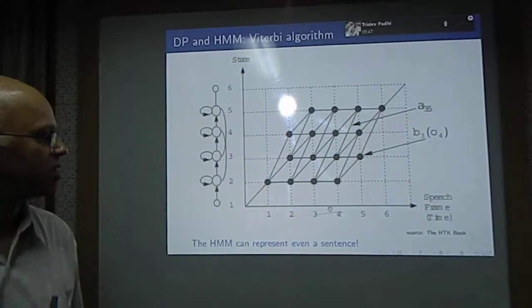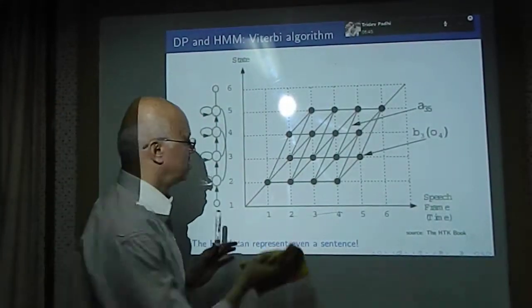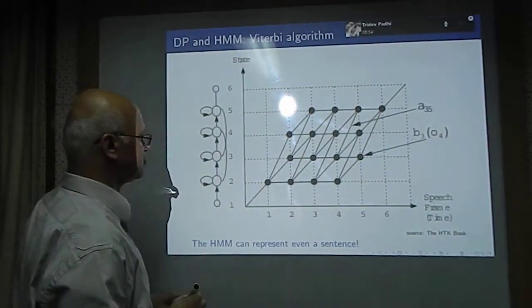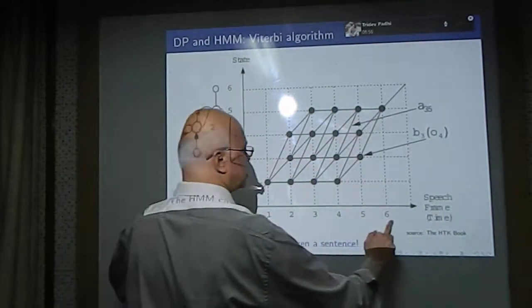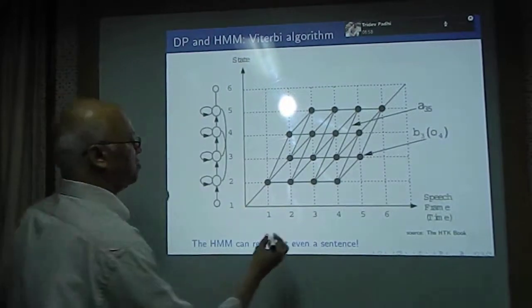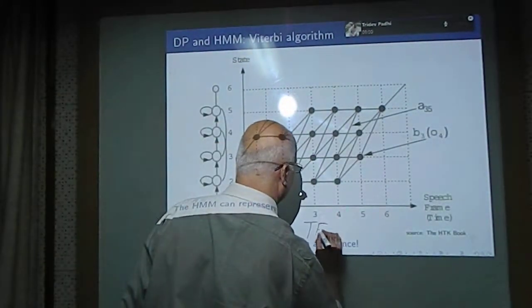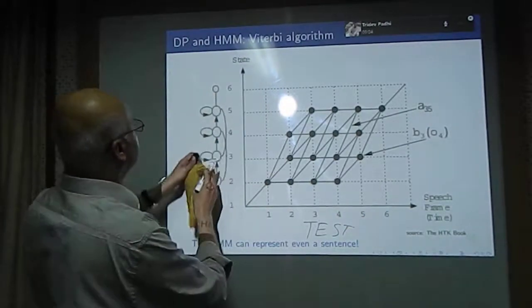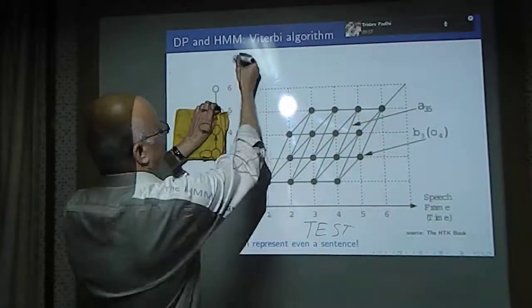When you did the dynamic time warping, we had the test feature vector sequence on the x-axis of this grid, and on the y-axis we had the reference feature vector sequence.